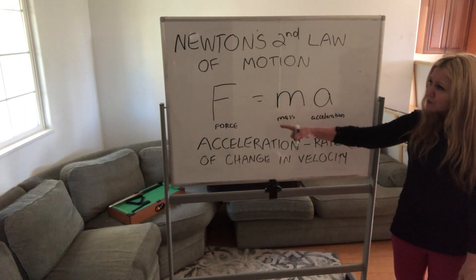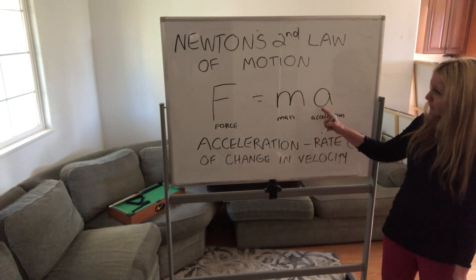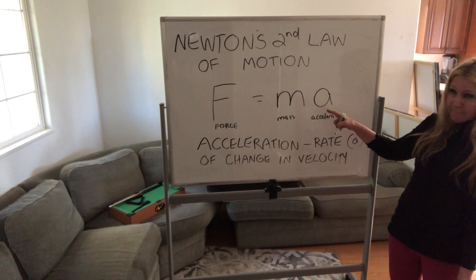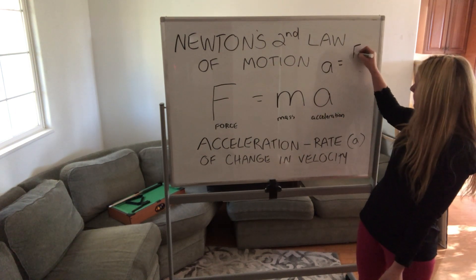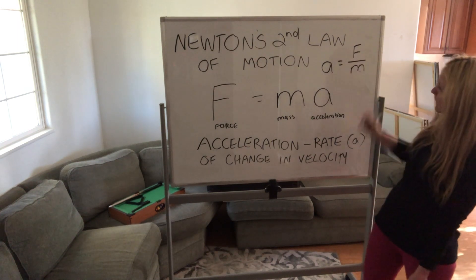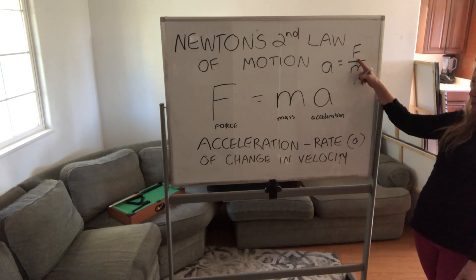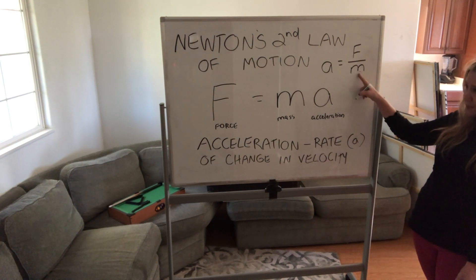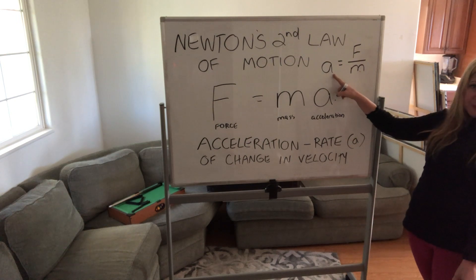If we rearrange the formula to find what 'a' equals, we divide both sides by m, and we get: a equals force divided by mass. As you increase the force, you increase the acceleration. Mass and acceleration are inversely related — if you increase the mass, you're decreasing the acceleration.